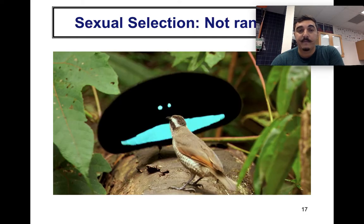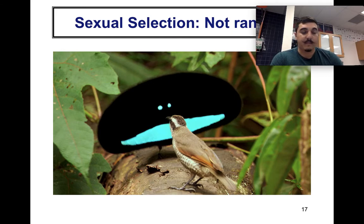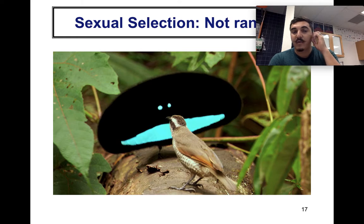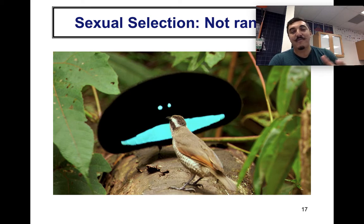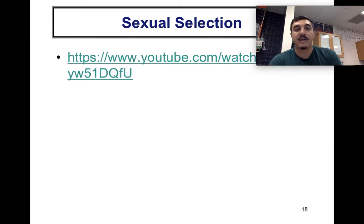Sexual selection is another non-random mechanism. A male bird will display behaviors to impress a female, and a mate will choose another mate based on attraction. This is specifically targeting or choosing that mate — that's sexual selection. A video on this will also be posted, and there may be test questions on it.